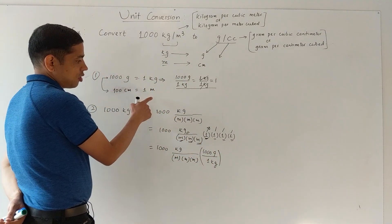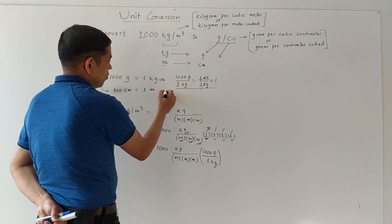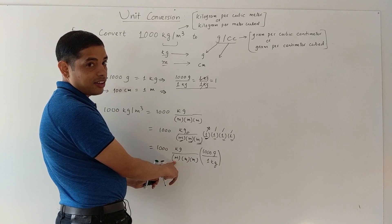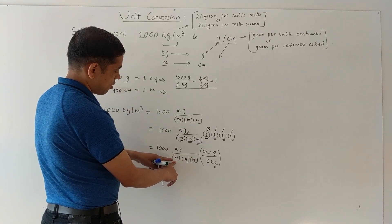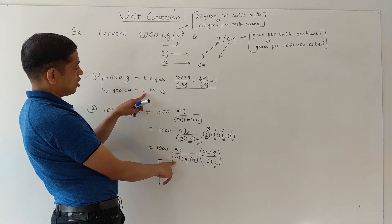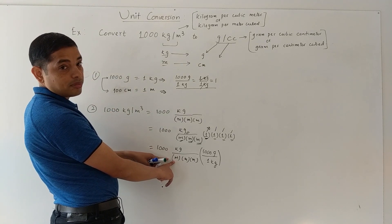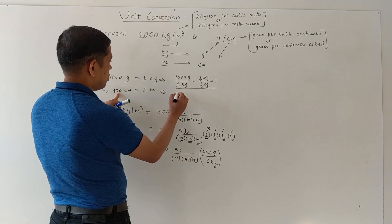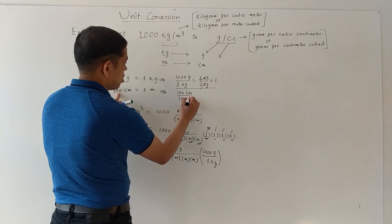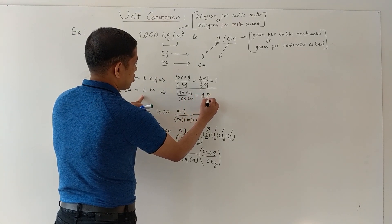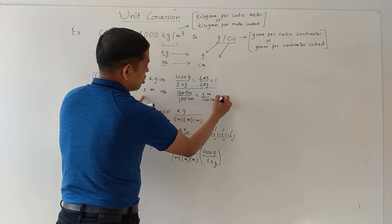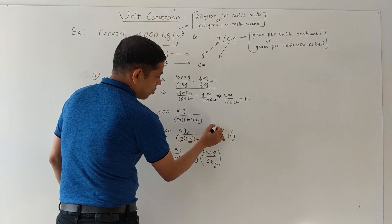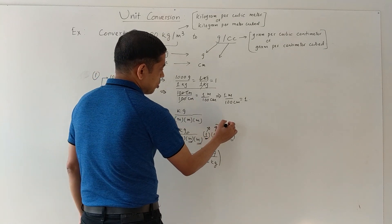Similarly, the remaining ones can be replaced using this relation. My goal is to get rid of meter. The meter is on the bottom, so we divide both sides by 100 centimeter: 100 centimeter divided by 100 centimeter equals one meter divided by 100 centimeter. So one meter divided by 100 centimeter equals one. These three ones will all be replaced by this expression.